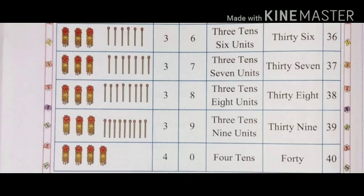Three bunches of math sticks means 30 math sticks. With 7 math sticks: 37. That is 3 tens and 7 units — 37. The spelling of 37 is T-H-I-R-T-Y (30) S-E-V-E-N (7): 37.